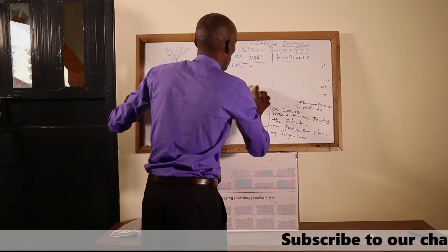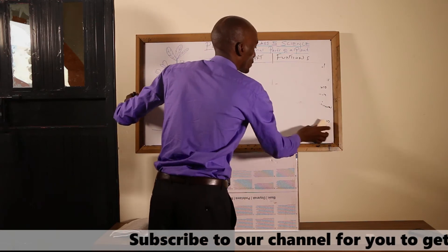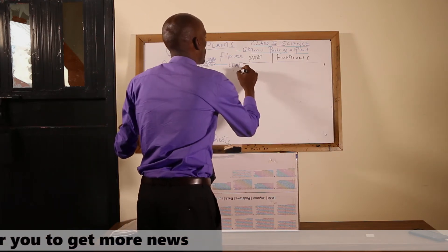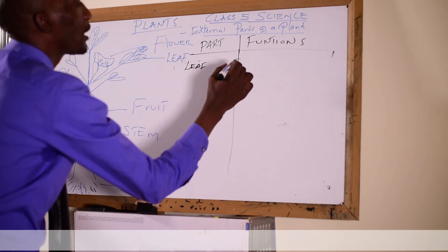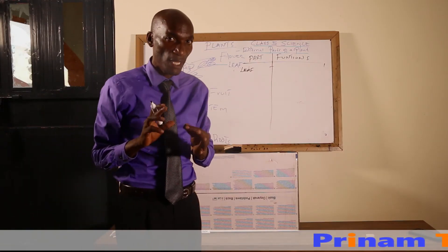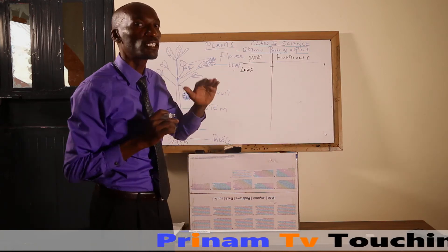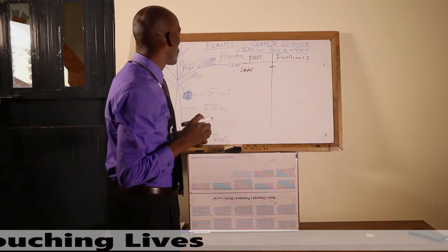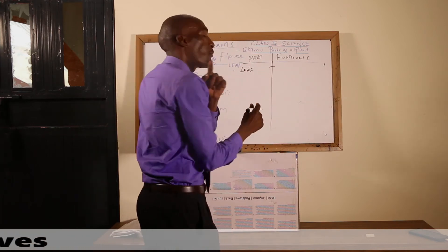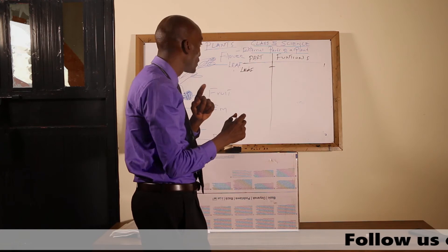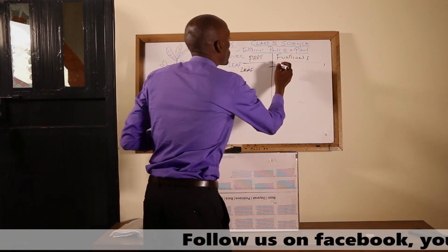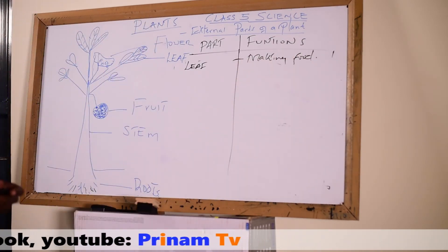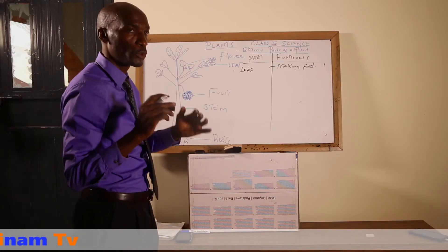The third external part is the leaves. The leaf is the kitchen of the plant — this is where the plant makes its own food. The process of making the plant's food is called photosynthesis. So one of the major functions of the leaves is photosynthesis, which is the making of the plant's food. We are going to learn more about photosynthesis in the next chapter.